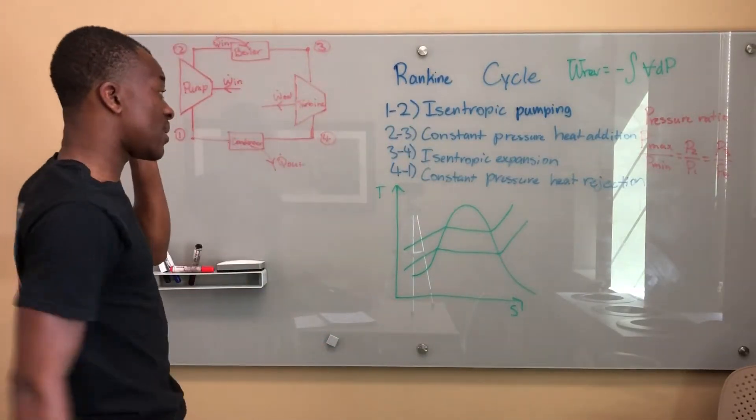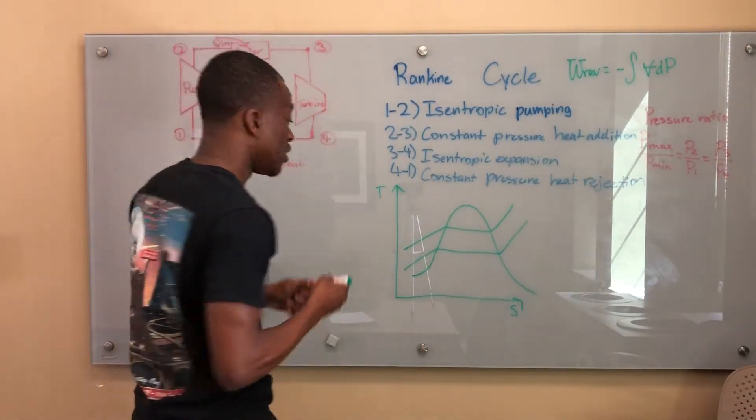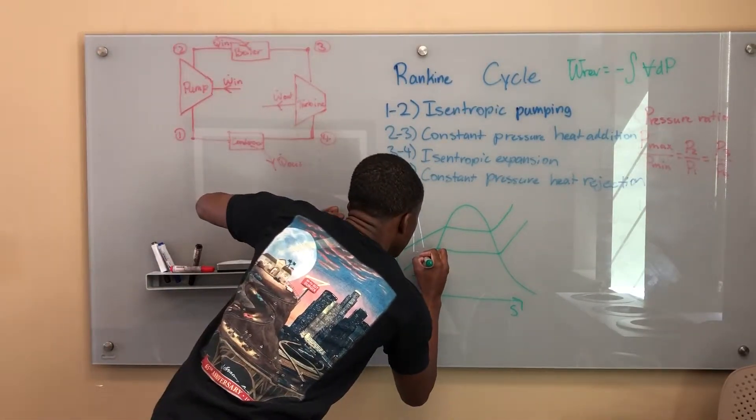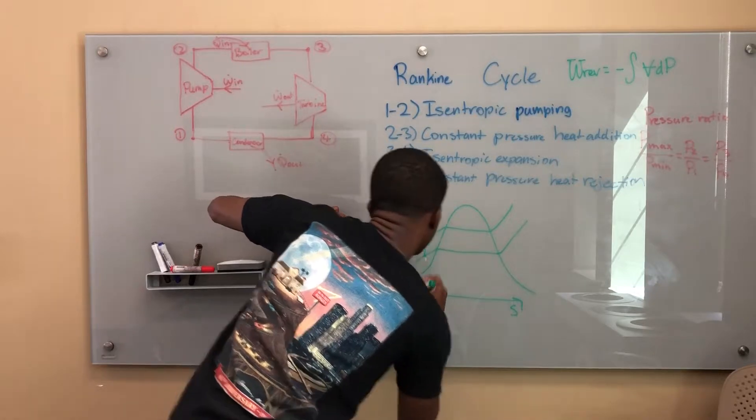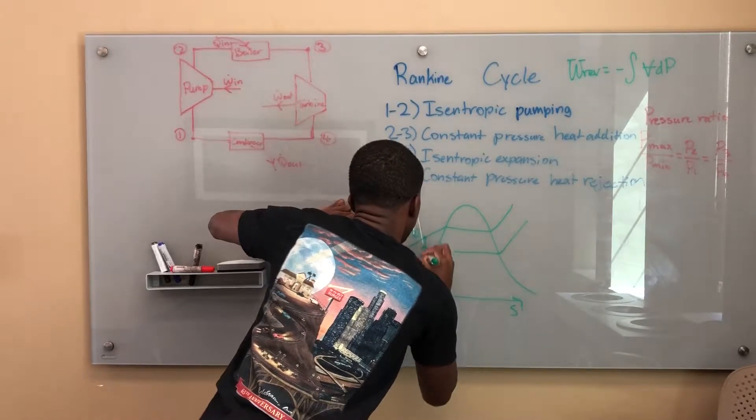Now, what we're going to end up having is, let's say we start it off as a compressed liquid. From P1 to P2, we're going to have something that goes straight up, because it's an isentropic process. So this would be our point 2.